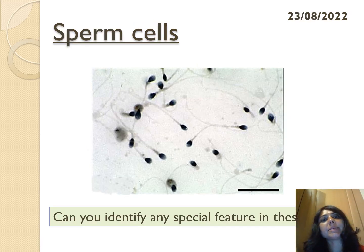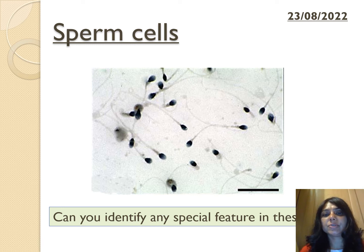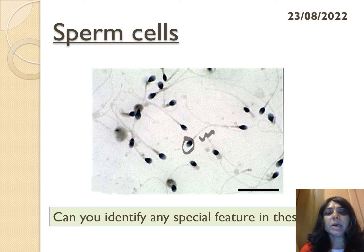These are sperm cells. As previously described, they have a streamlined structure with a small head containing the nucleus, and a tail to help them swim and fertilize the egg. They are streamlined because they are very fine structures that can swim quite fast because of their shape and size.